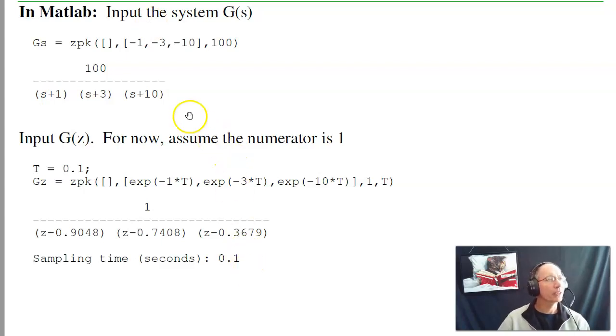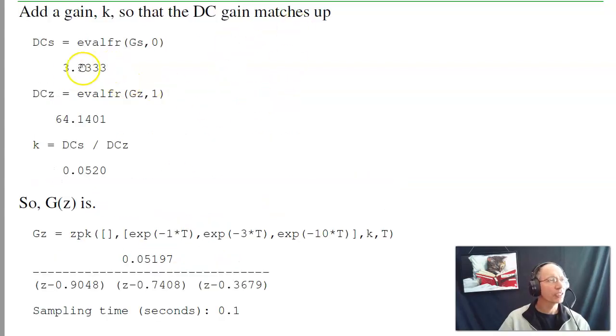In MATLAB, I can do that as well. Here's my system in the S-plane. In the Z-plane, I'll just map the pole as e^(sT). The numerator is one, and my sampling rate is 0.1. That gives me G(z). The numerator is not right. To get it right, find the DC gain of the plant. Find the DC gain of the compensator with the numerator being one. I'm off by the ratio. So the numerator should be 0.052.